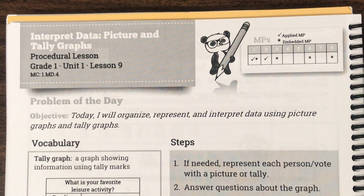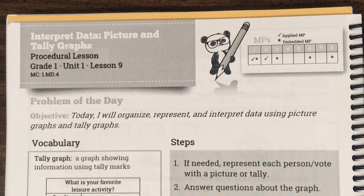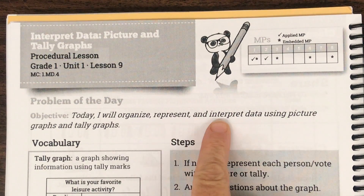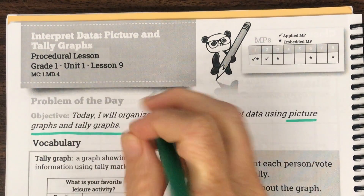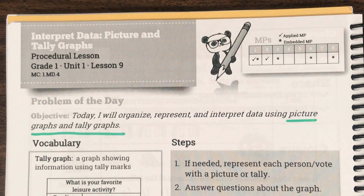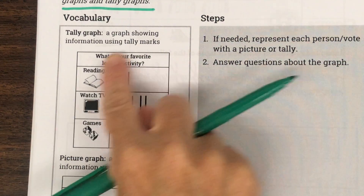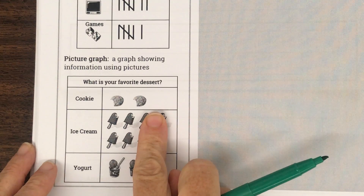Good morning, boys and girls. Today we are on page 57 of your student journal. Our objective, or our goal today, is: I will organize, represent, and interpret data using picture graphs and tally graphs. In our vocabulary, they give us a picture of a tally graph to remind us, and a picture of a picture graph to remind us.